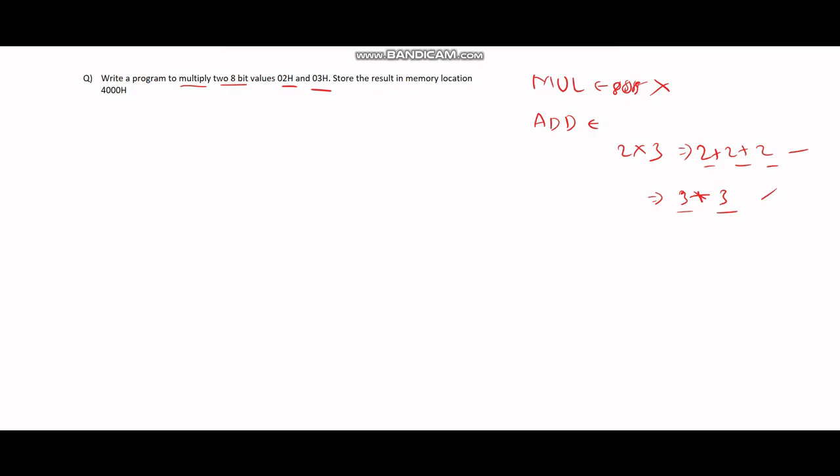We can take any one of the approaches in solving this problem. First, let's load these two values in our registers. We'll load 02 in register A and we'll load the value 03 in register B. Also, this value 03 is going to act as our counter.